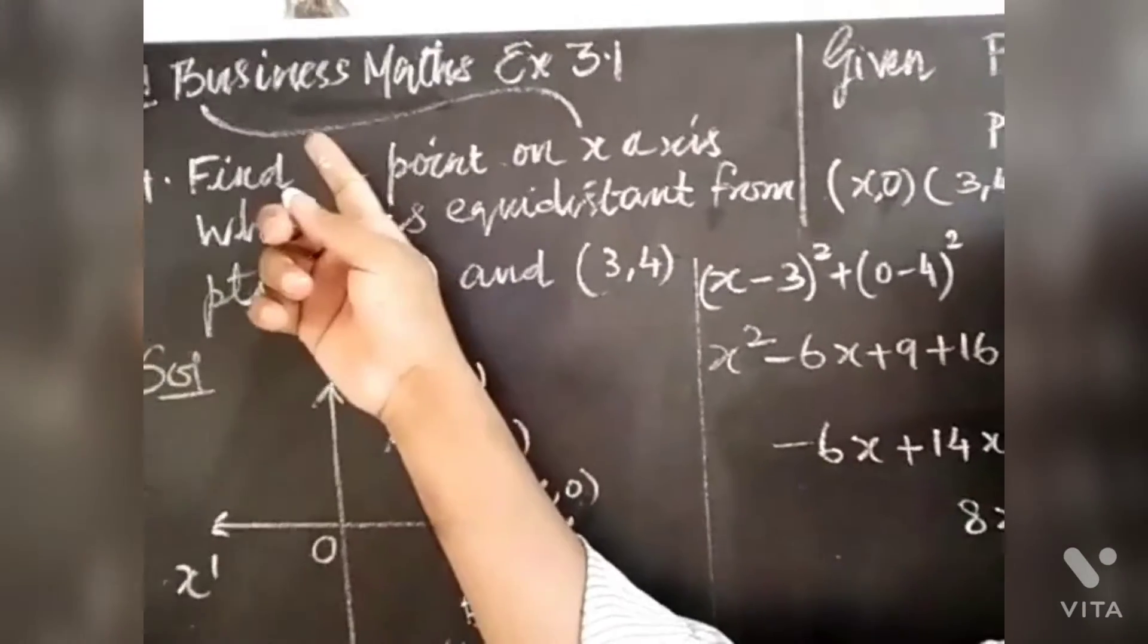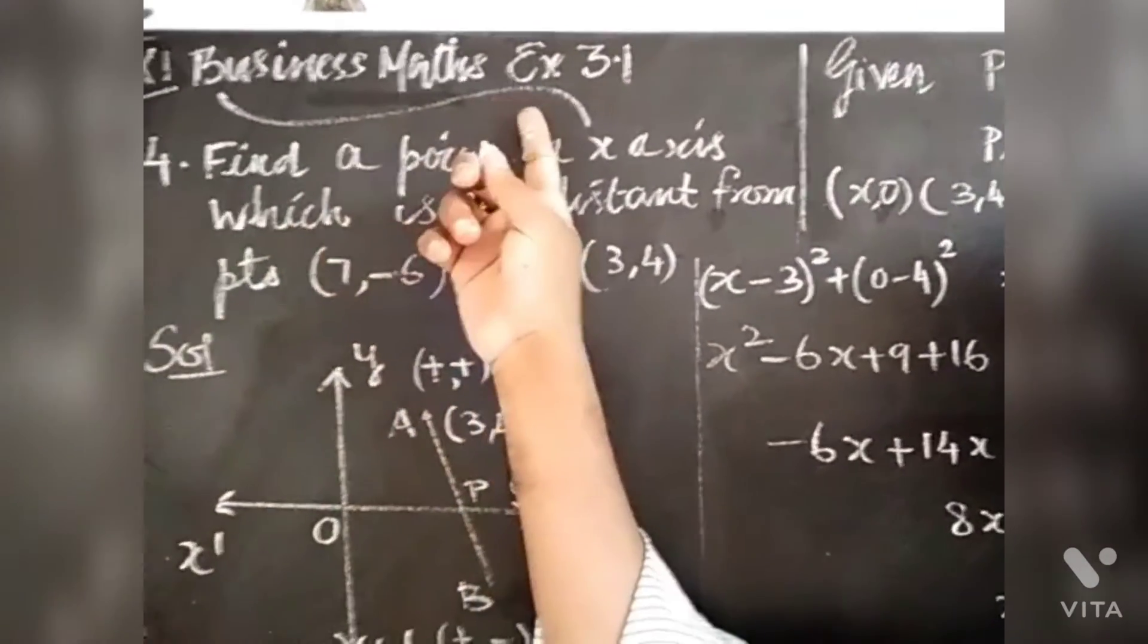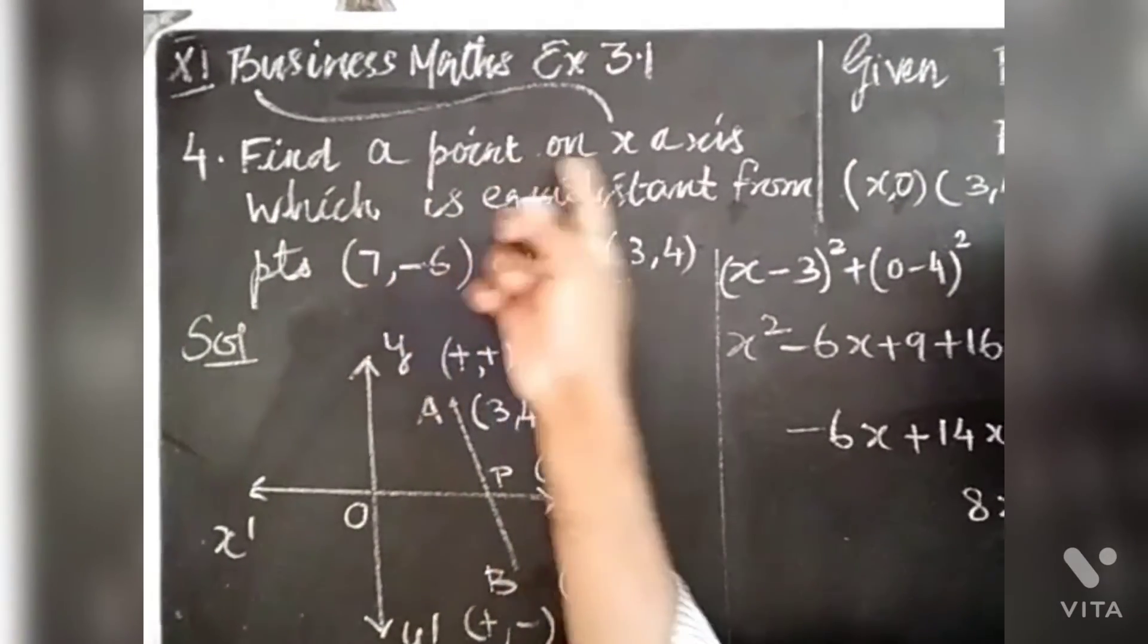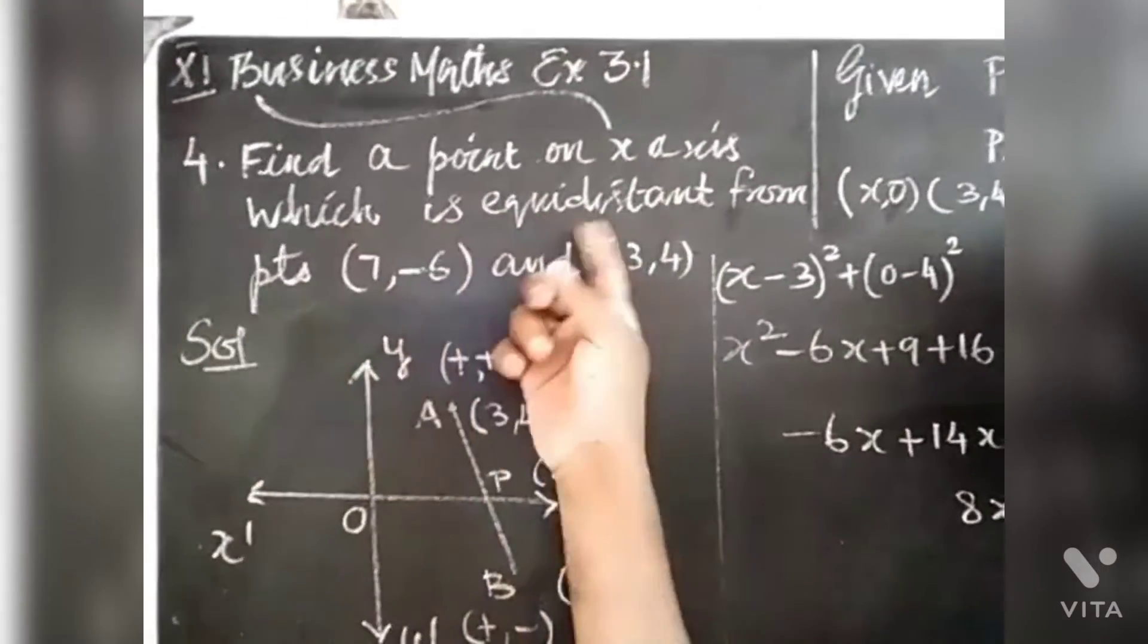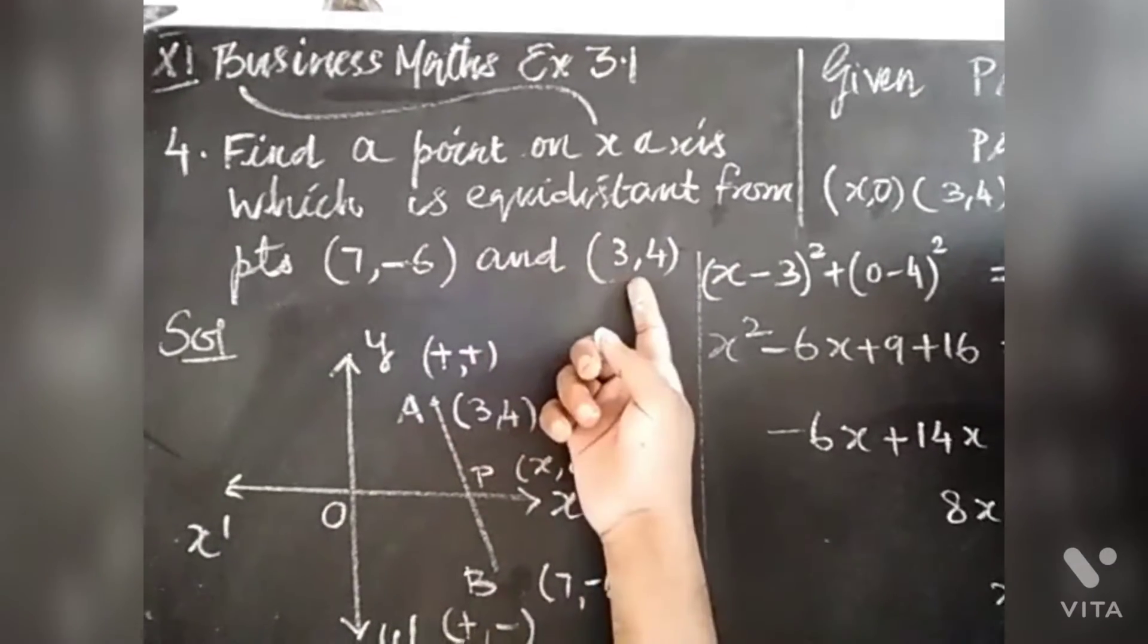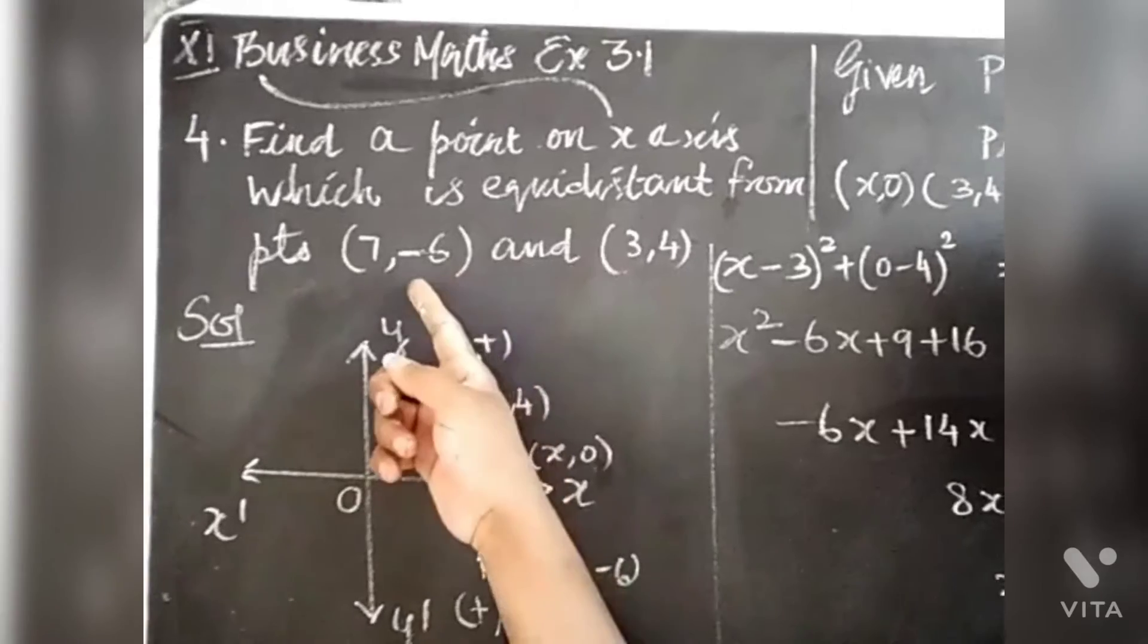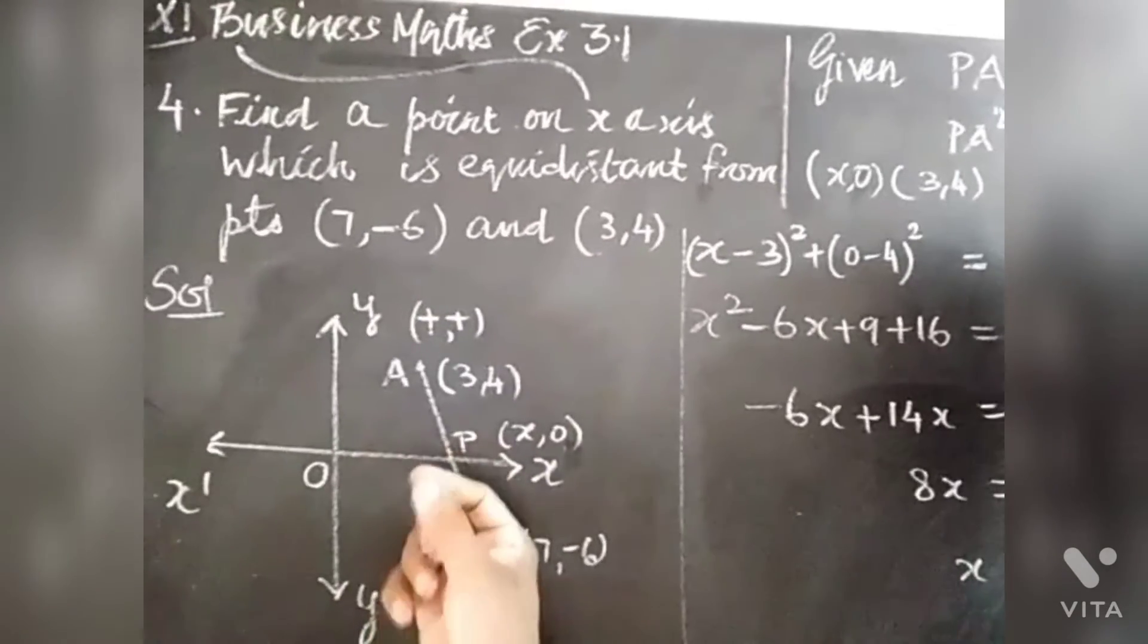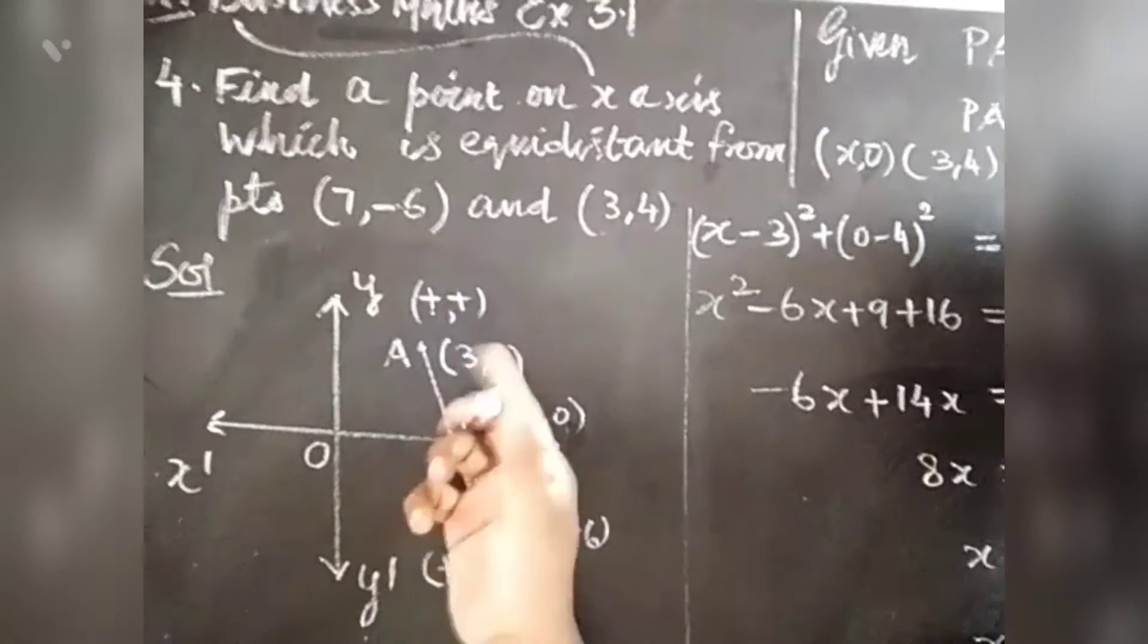Welcome to the 11th business max x is 3.1 sum number 4. Find a point on x axis which is equal distance from points (7, -6) and (3, 4).